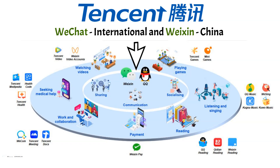Besides main features like socializing and sharing, Tencent provides more services. The most important one is Weixin Pay, where users can make transactions and pay online — like Google Pay or other digital wallets. They charge a commission for every transaction. They also provide music and video services where users can subscribe for premium content or use it for free but watch ads, which is another revenue stream. They provide a lot of services for free in order to attract more users, and then show them ads — the same business model as Facebook and Google.